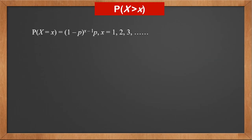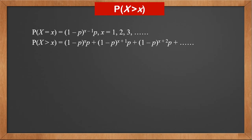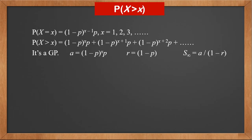For geometric distribution, P(X = x) is (1 minus p) to the power x minus 1 times p, where x can be 1, 2, 3 and so on. Now let's calculate P(X > x). Since X is greater than x, the probability is the sum of P(x+1) + P(x+2) + P(x+3) and so on to infinity. This is a geometric progression (GP). The first term a is (1 minus p) to the power x times p, and the common ratio r is (1 minus p). The sum to infinity is a over 1 minus r. Substituting the values, we get (1 minus p) to the power x times p, over 1 minus (1 minus p), which simplifies to (1 minus p) to the power x. Therefore, P(X > x) is (1 minus p) to the power x, and P(X ≤ x) is 1 minus (1 minus p) to the power x.